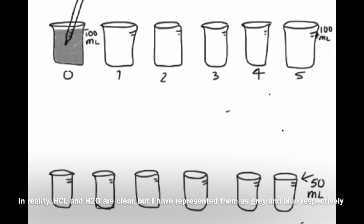Pipette 10 milliliters of hydrogen chloride into beaker 1. Now add 90 milliliters of water to beaker 1 to make 100 milliliters. Pipette 10 milliliters of 0.10 molarity hydrogen chloride from beaker 1 into beaker 2. Now add 90 milliliters of water to beaker 2 to make 100 milliliters of 0.010 molarity hydrogen chloride.